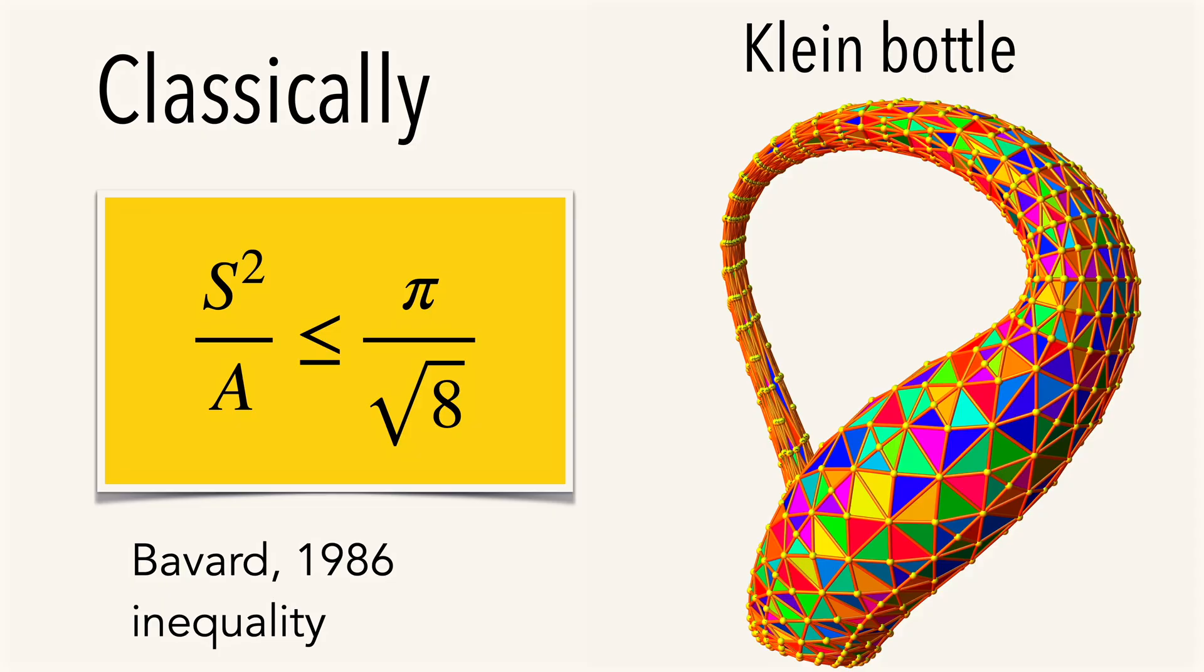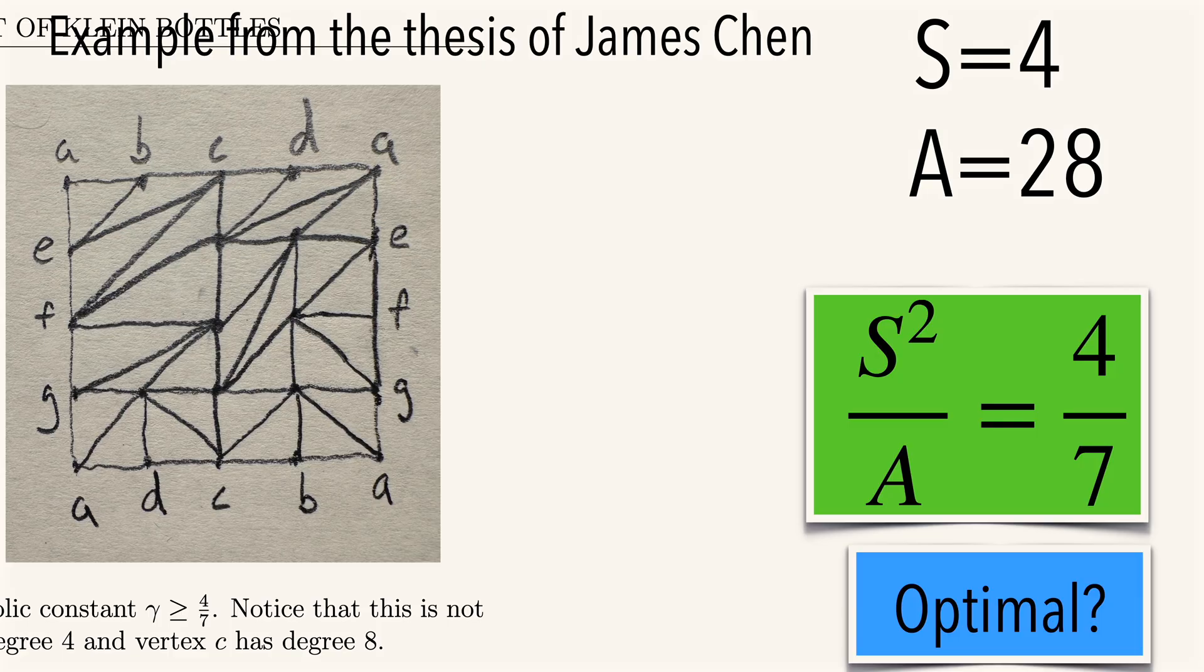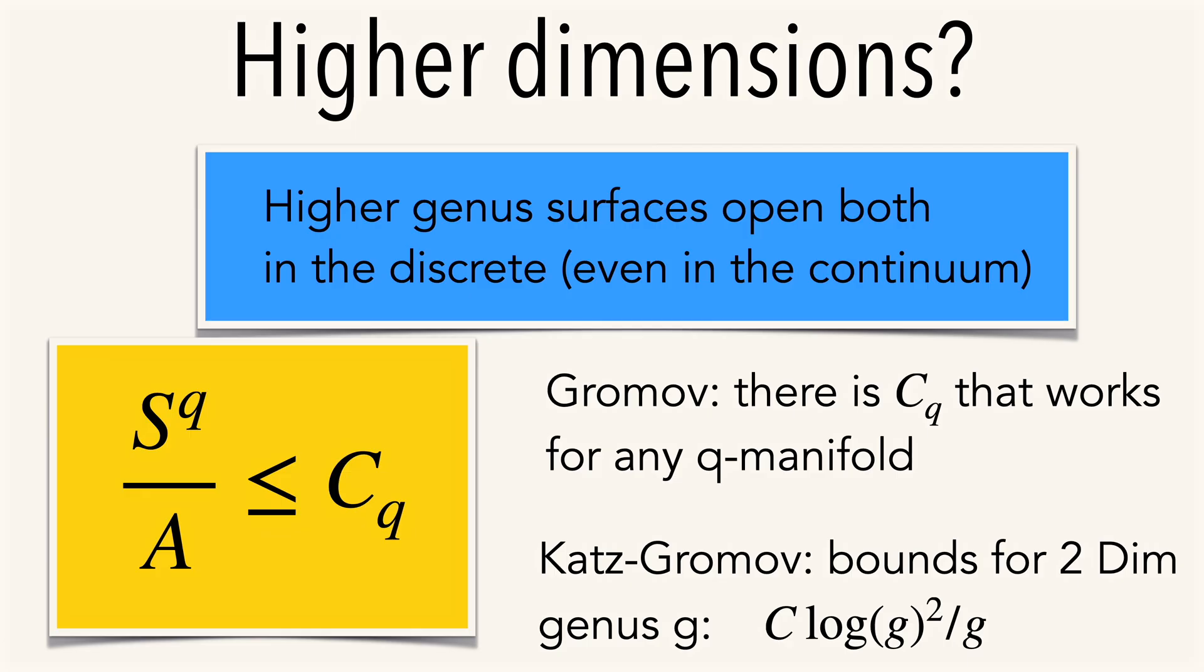Also classically, about 40 years ago, one has seen that pi over square root of eight is optimal. An example of James in discrete gives a ratio of four over seven.